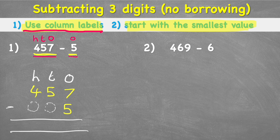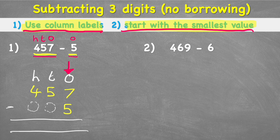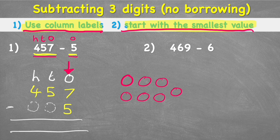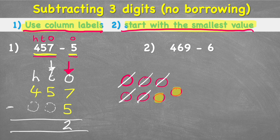Step two: start with the smallest value — our ones. Ones are smaller than tens, which are smaller than hundreds. Looking at the ones column, I have 7 subtract 5. If I have seven counters and subtract five — one, two, three, four, five — I'm left with two. Then in the tens column: 5 subtract 0 is still 5. In the hundreds column: 4 subtract 0 is 4. So 457 subtract 5 equals 452.